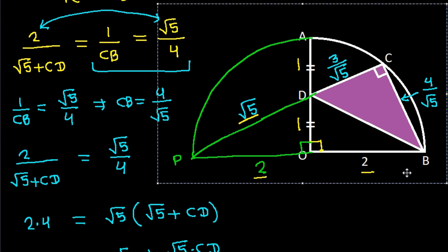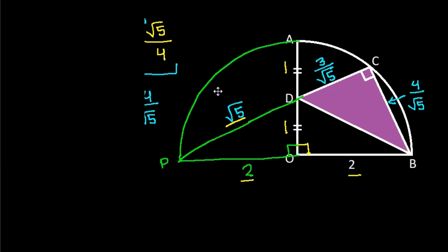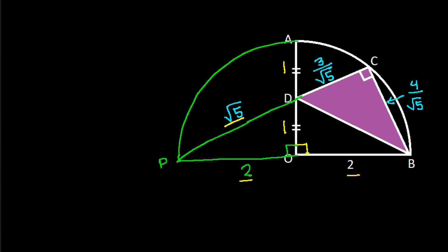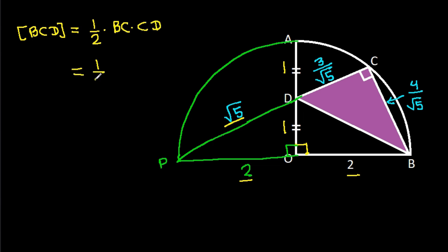Now the area of triangle BCD equals one-half times BC times CD, which is one-half times 4 over root 5 times 3 over root 5, which equals 6 over 5. So the area is 6 over 5.